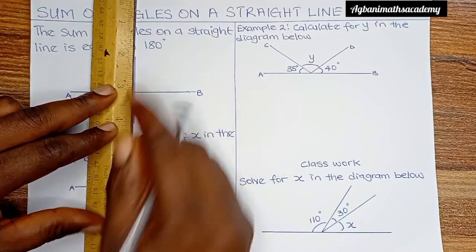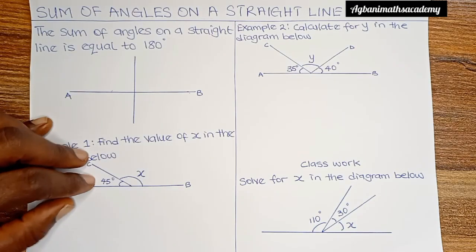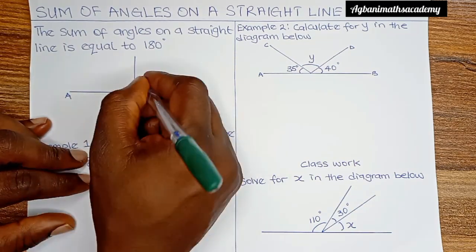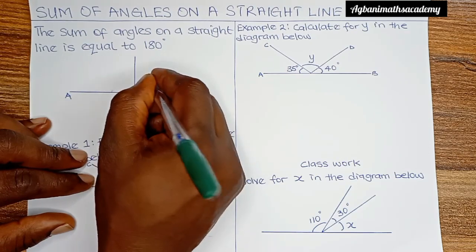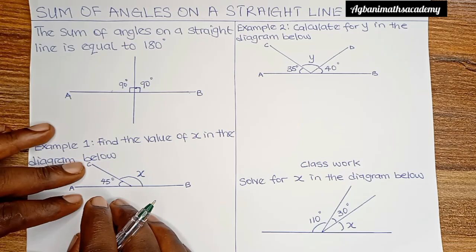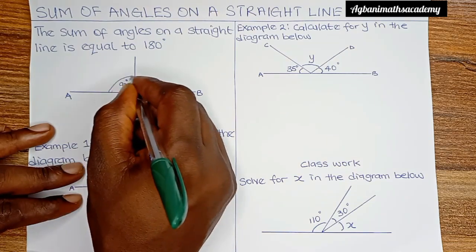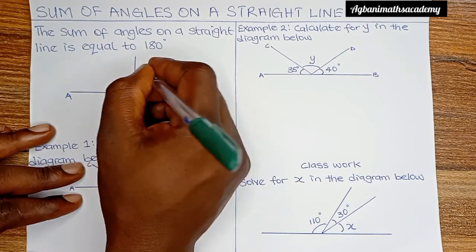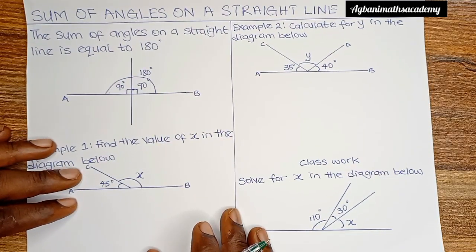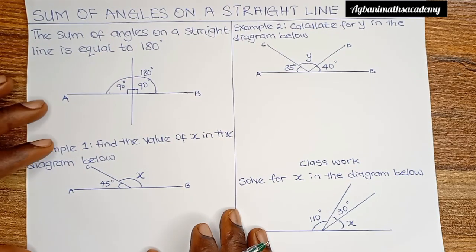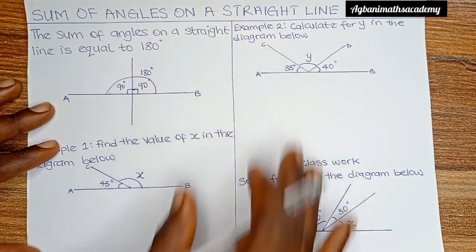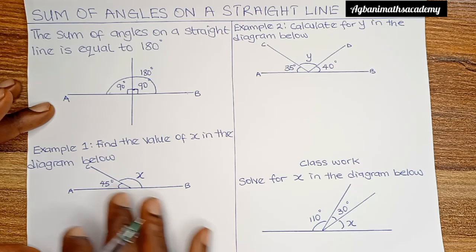If you draw a vertical line bisecting AB, this angle here is going to give you 90 degrees, and this angle here will also be 90 degrees. The summation of these two angles — 90 plus 90 — gives us 180 degrees. So we can see that the sum of angles on a straight line is equal to 180 degrees.